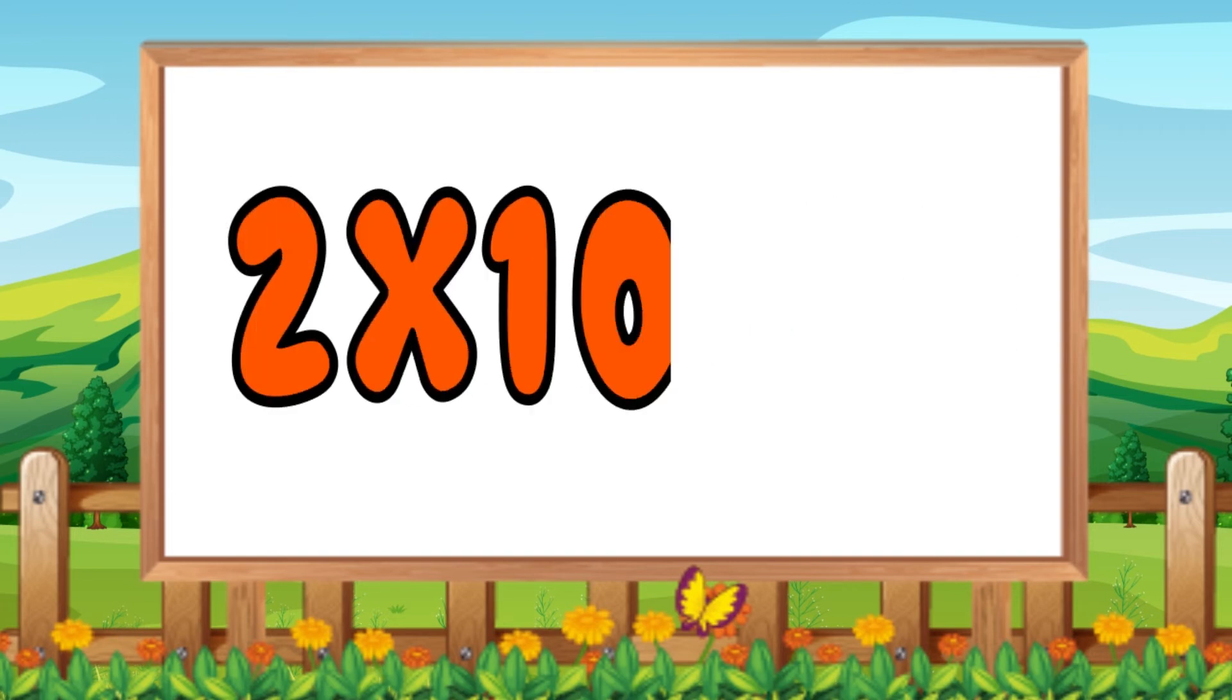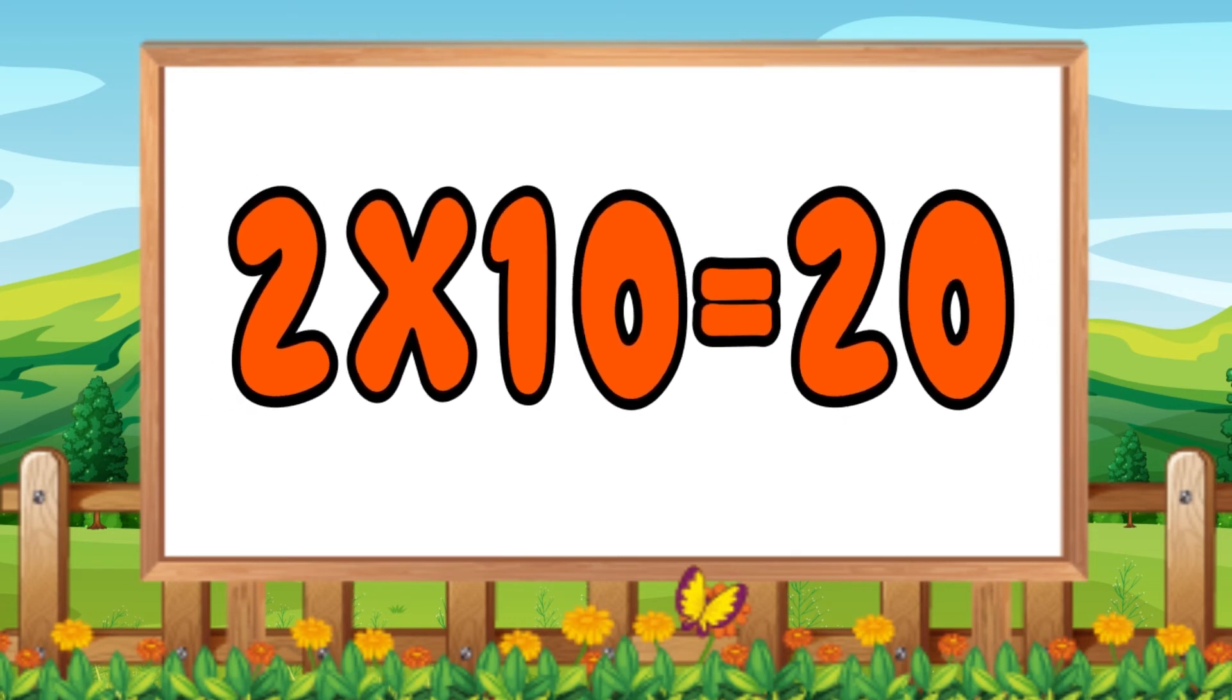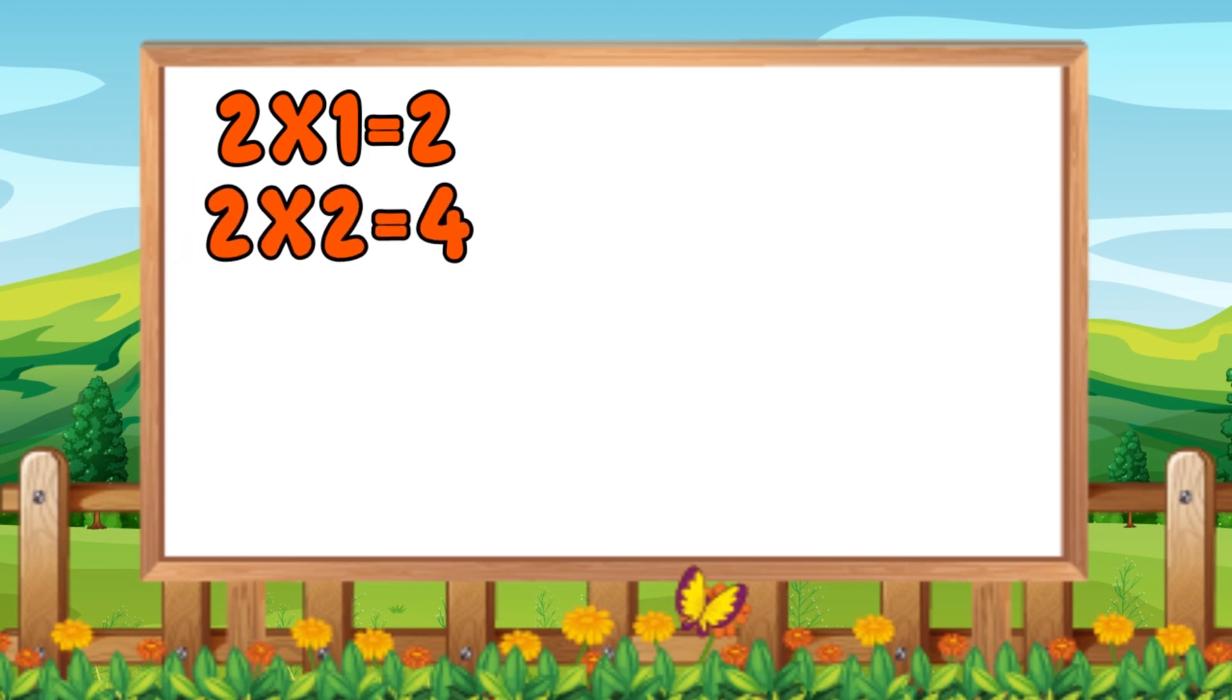Two tens are twenty, two tens are twenty. Two ones are two, two twos are four, two threes are six.